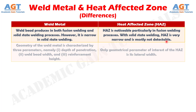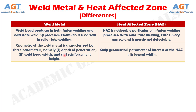Difference Number 8: Geometry of the Weld Metal is characterized by three parameters — namely, Depth of Penetration, Weld Bead Width, and Reinforcement Height — whereas the only geometrical parameter of interest for the Heat Affected Zone is its Lateral Width.